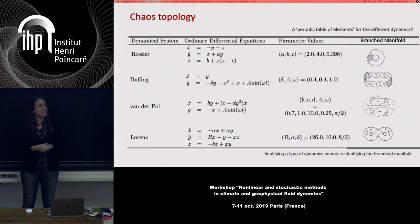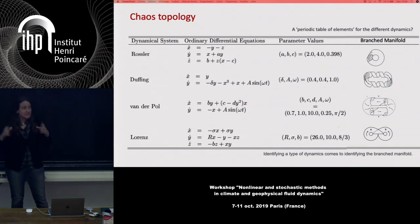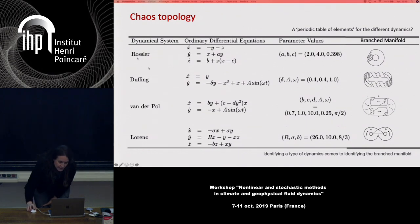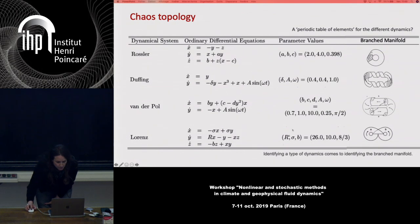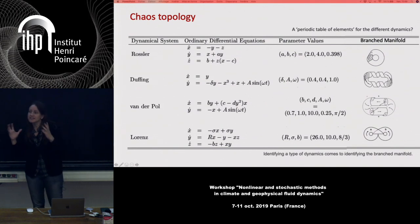In the 1990s, Gilmore and co-workers had a dream of establishing a sort of periodic table of elements of different dynamics, and they quite succeeded using knots in three dimensions. There you have very well known dynamical systems — Rössler, Duffing, Van der Pol, Lorenz — and their associated branched manifolds. The idea behind this approach is that to identify a type of dynamics, you just have to identify the branched manifold associated to it.